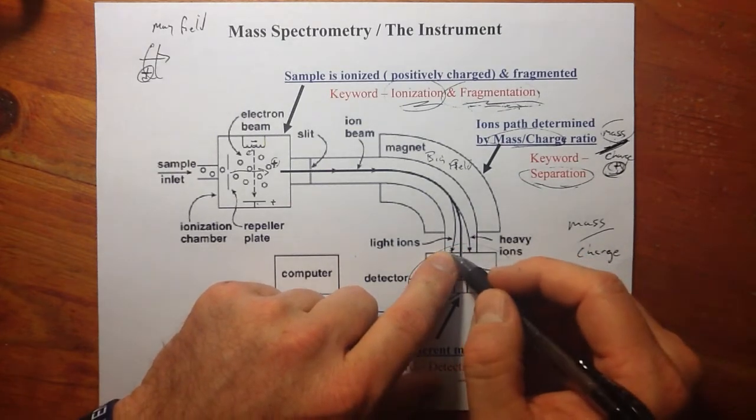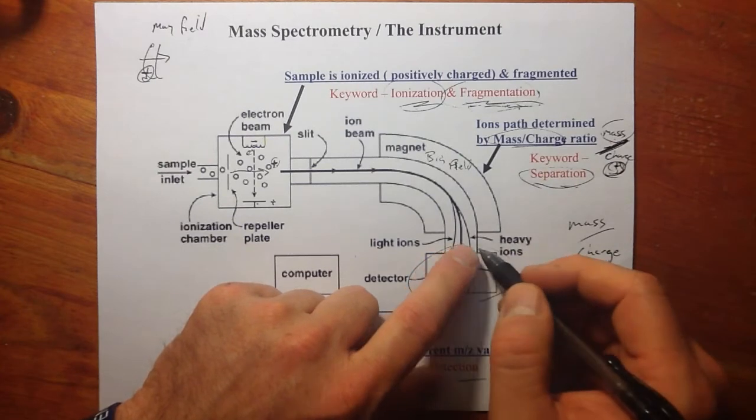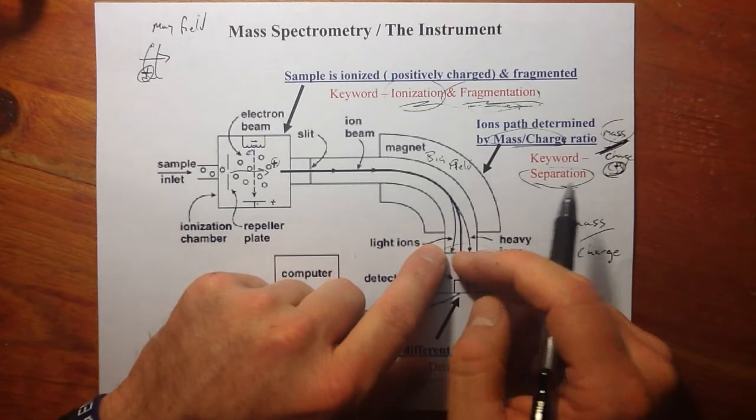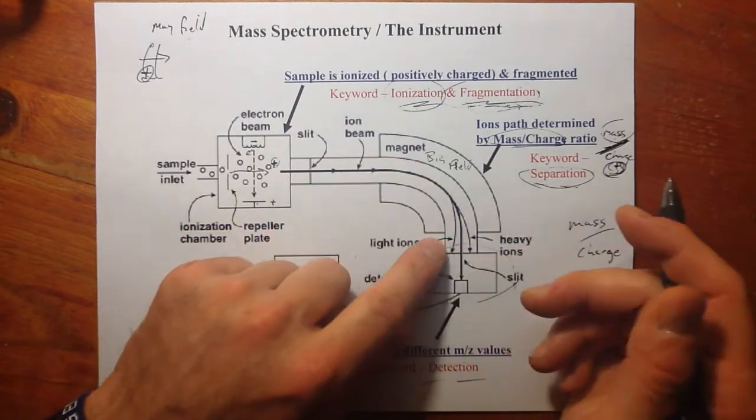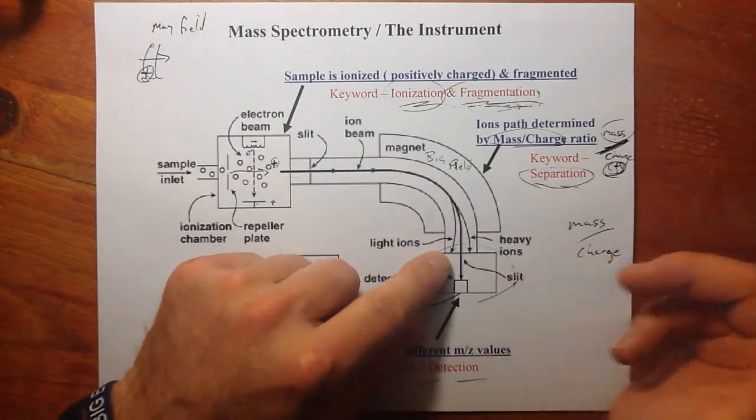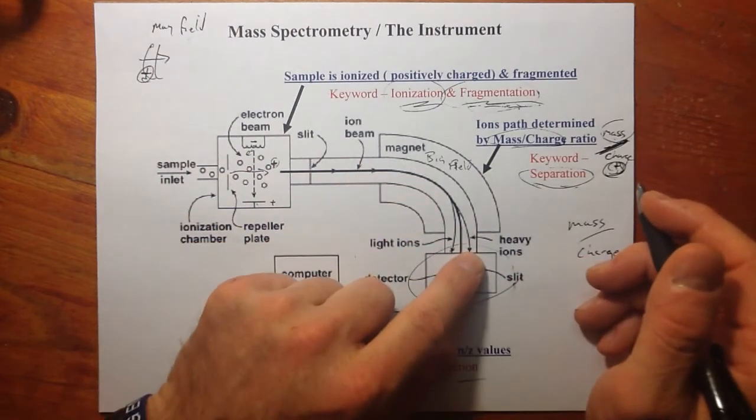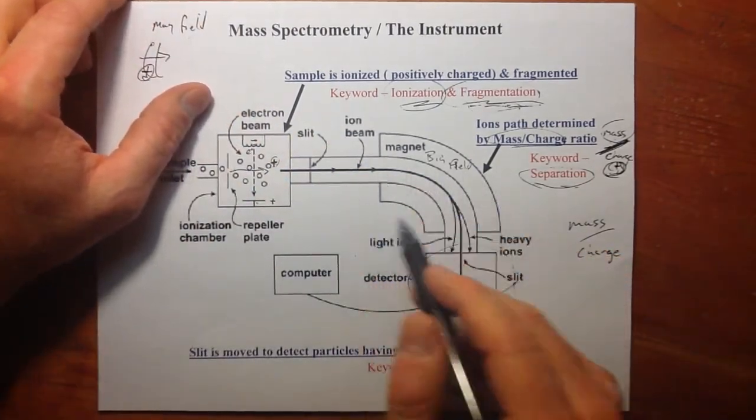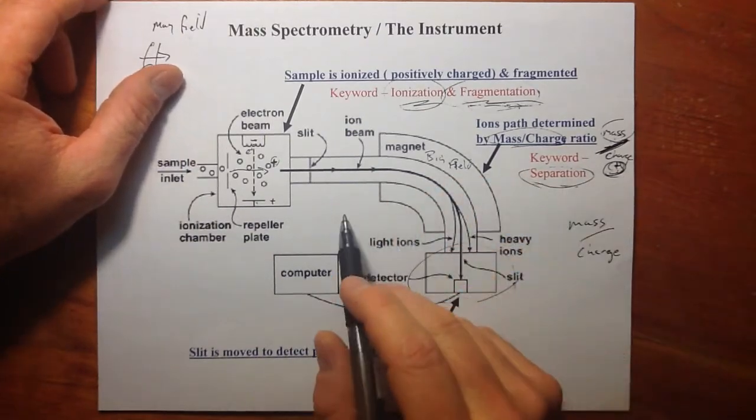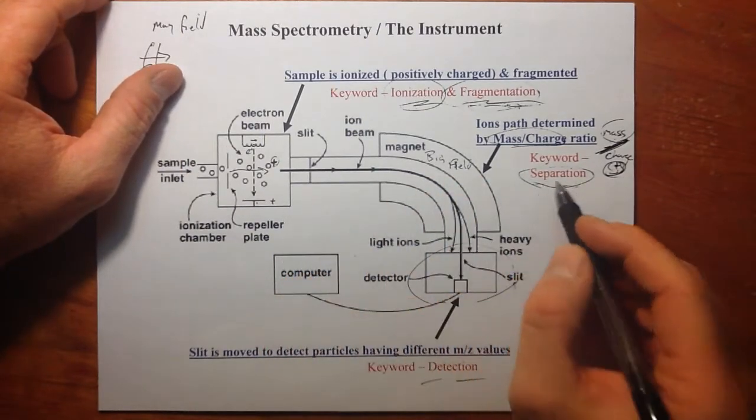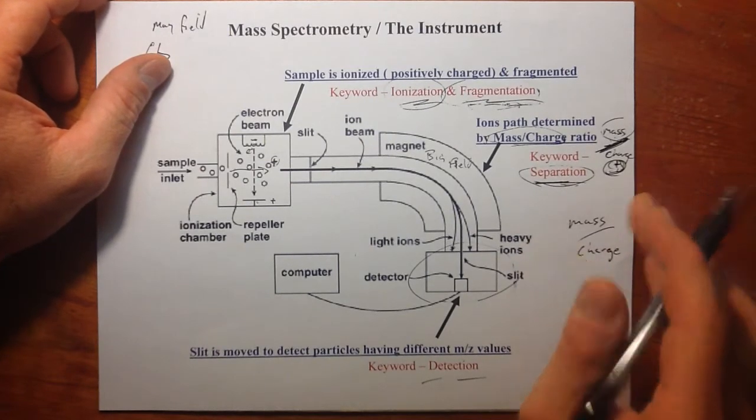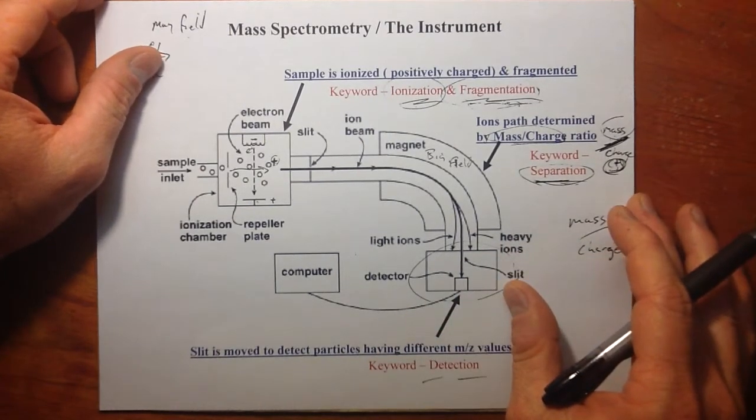But if the mass, again assuming just a plus one charge, is light, it would bend a lot. So we can have maybe a dually three-quarter ton truck and a Fiat. The particle that comes through with a positive charge will bend more if it's light and will bend less if it's heavy. This is in the separation chamber, and we're assuming most of the things going through are going to have a plus one charge.